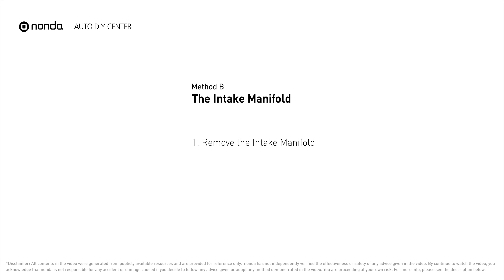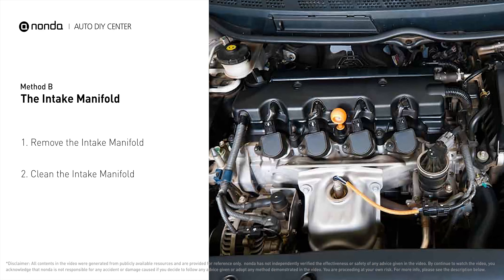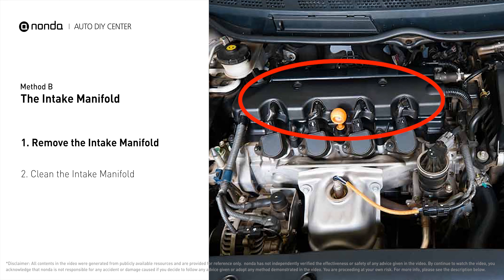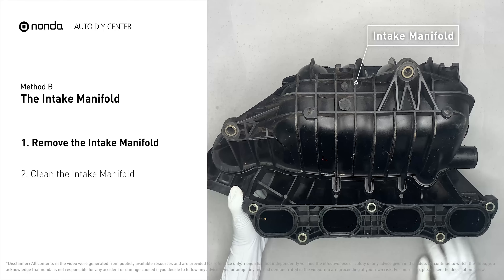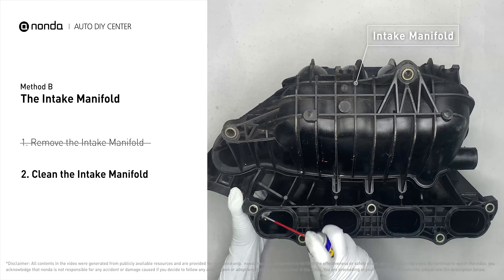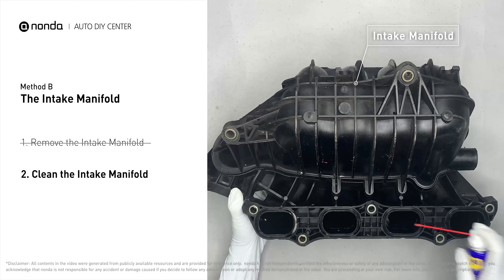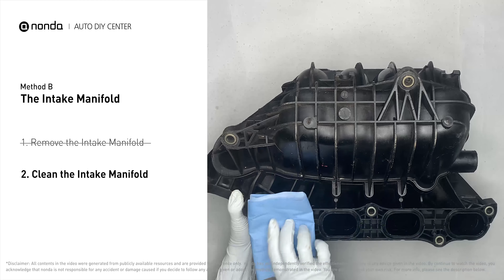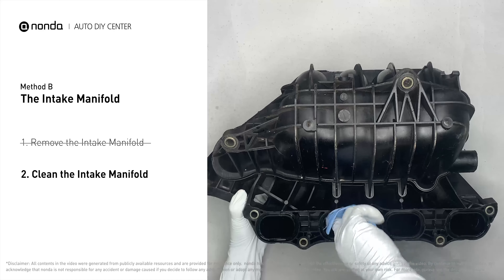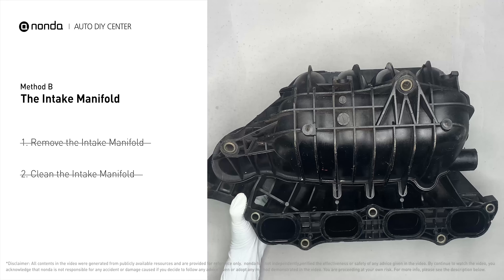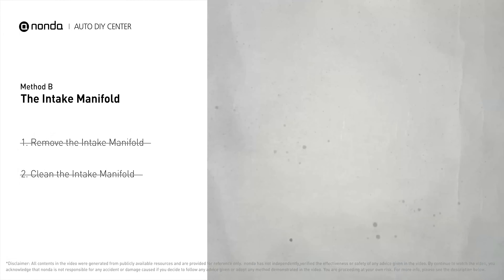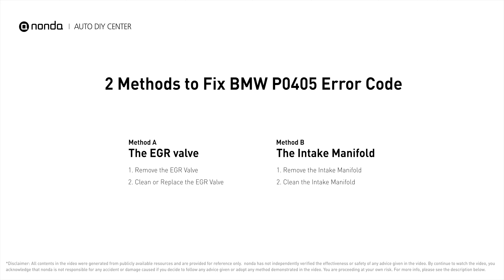Method B: the intake manifold. The intake manifold sits on top of the engine and plays a key role in the combustion process. First, carefully remove the intake manifold from the engine. Use the WD-40 cleaner to clean up the crud inside the intake manifold and wipe it well to make sure all the carbon buildup is removed. Reinstall the intake manifold back after it is cleaned and dried.